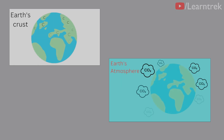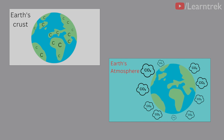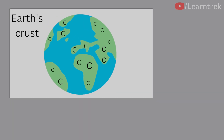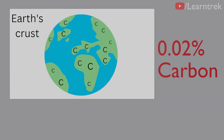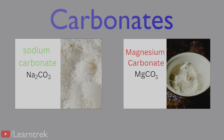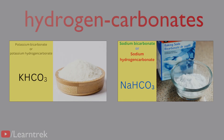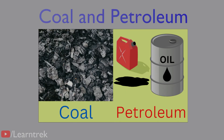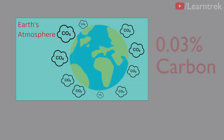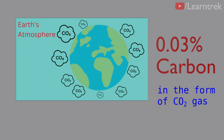The amount of carbon present in the Earth's crust and in the atmosphere is very less. The Earth's crust has only 0.02% carbon in the form of minerals like carbonates, hydrogen carbonates, coal, and petroleum. And the atmosphere has 0.03% of carbon in the form of carbon dioxide gas.